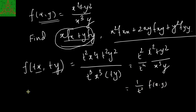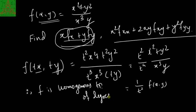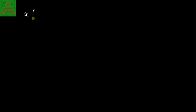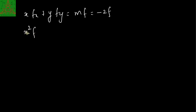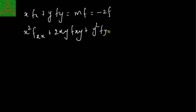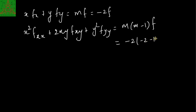So f is a homogeneous function of degree minus 2. Therefore, by Euler's theorem, x·fx + y·fy = m·f = −2·f. And the second expression x²·fxx + 2xy·fxy + y²·fyy = m·(m−1)·f = (−2)·(−2−1)·f = (−2)·(−3)·f = 6·f.